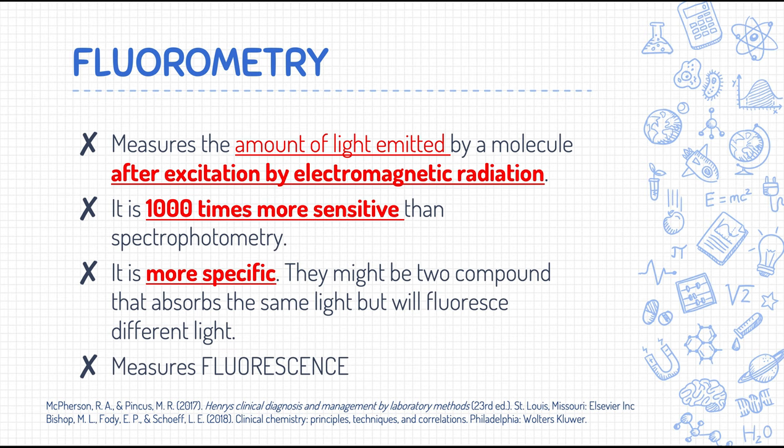The light source is a source of short-wavelength but high-energy light. The reason it must be short wavelength and high energy is because the goal is to excite the molecule. The most common light sources used are the mercury arc lamp and the xenon arc lamp. The key point to remember is that the light emitted by the light source is short wavelength with high energy, which is very important when we discuss fluorescence.